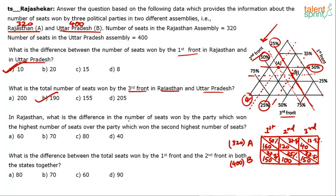Next question: In Rajasthan, what is the difference in the number of seats won by the party with the highest number of seats over the party with the second highest? For Rajasthan (assembly A): highest = 160 (First Front), second highest = 120 (Second Front). Difference = 40. Option C is the answer.